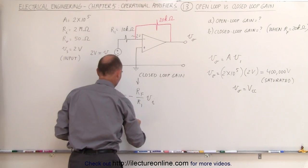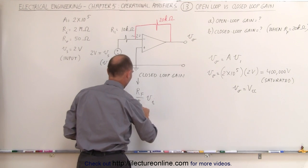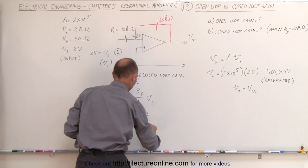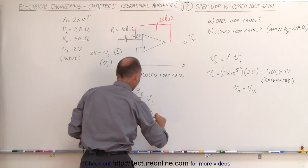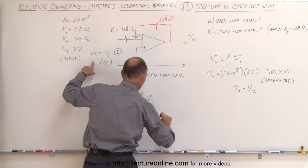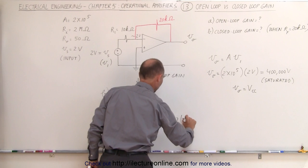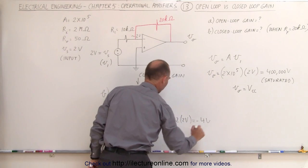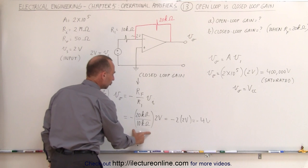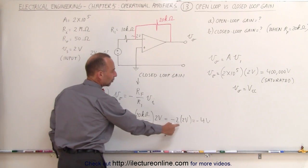And so this then becomes equal to minus R_f which is 20 kilo ohms divided by R_i which is 10 kilo ohms multiplied times V_i and V_i was going to be 2 volts and therefore this is going to be equal to minus 2 times 2 volts or minus 4 volts for the output which means that the closed loop gain is minus 2, minus 2 times input voltage which gives us the output voltage.